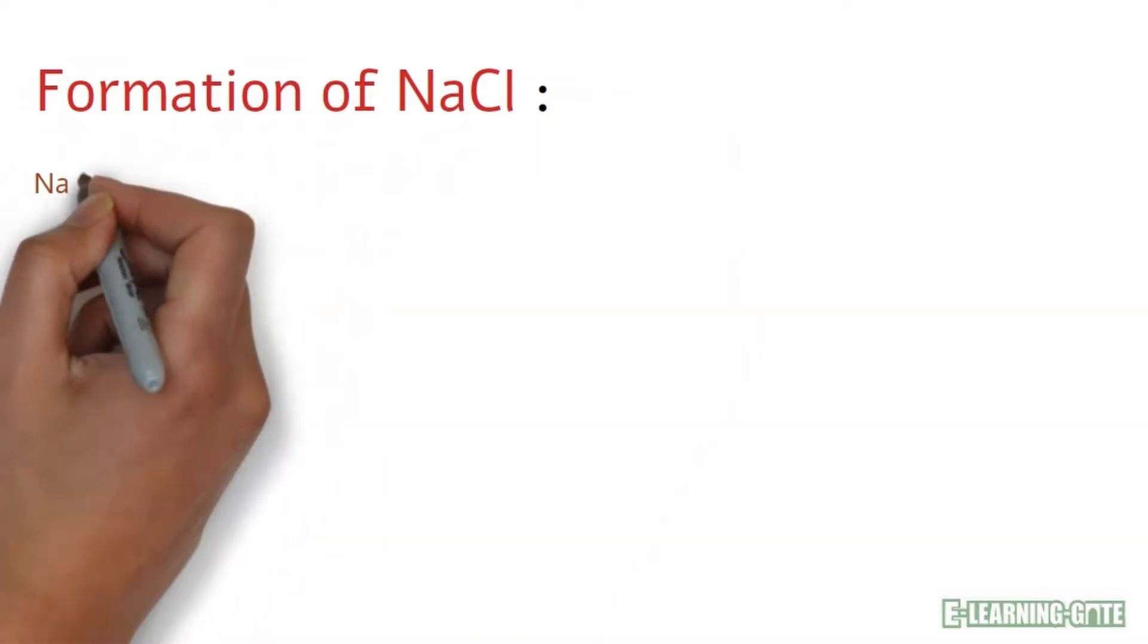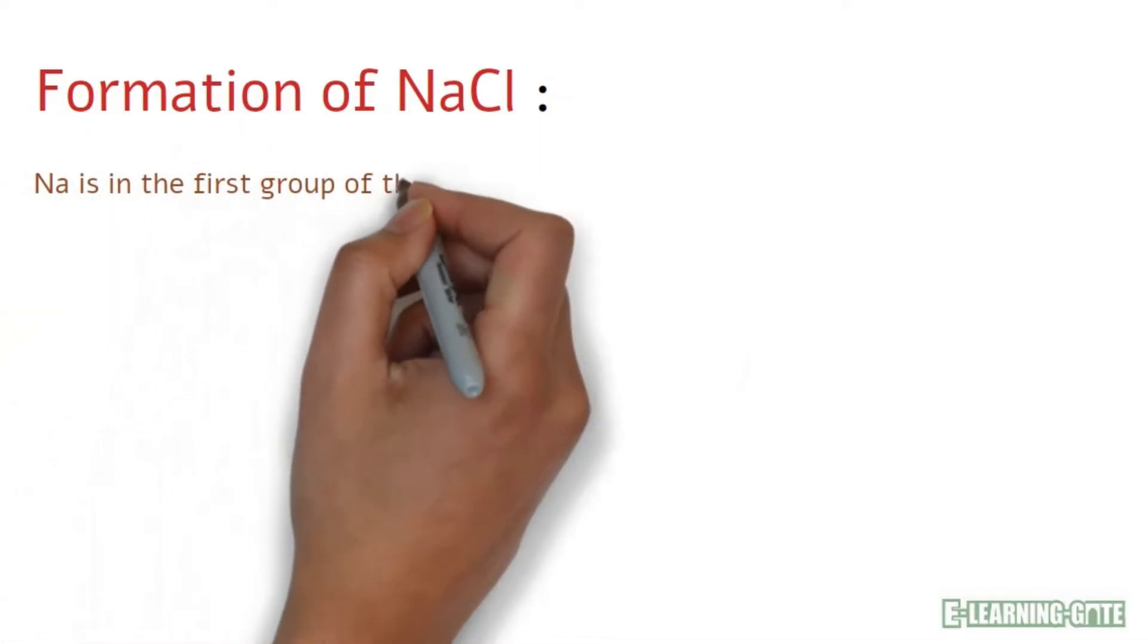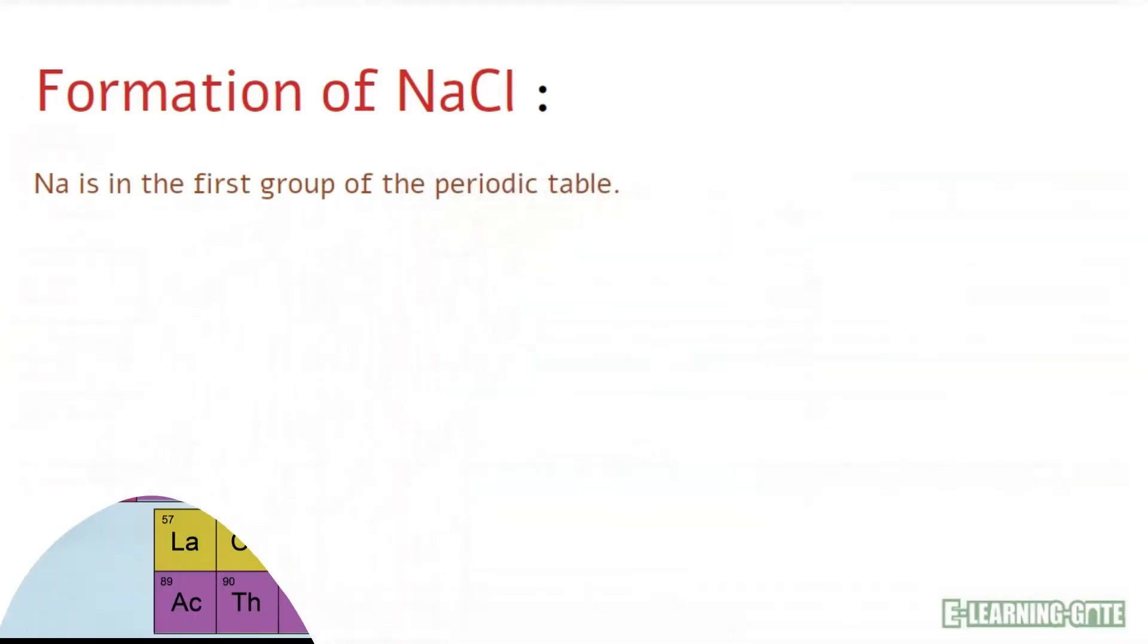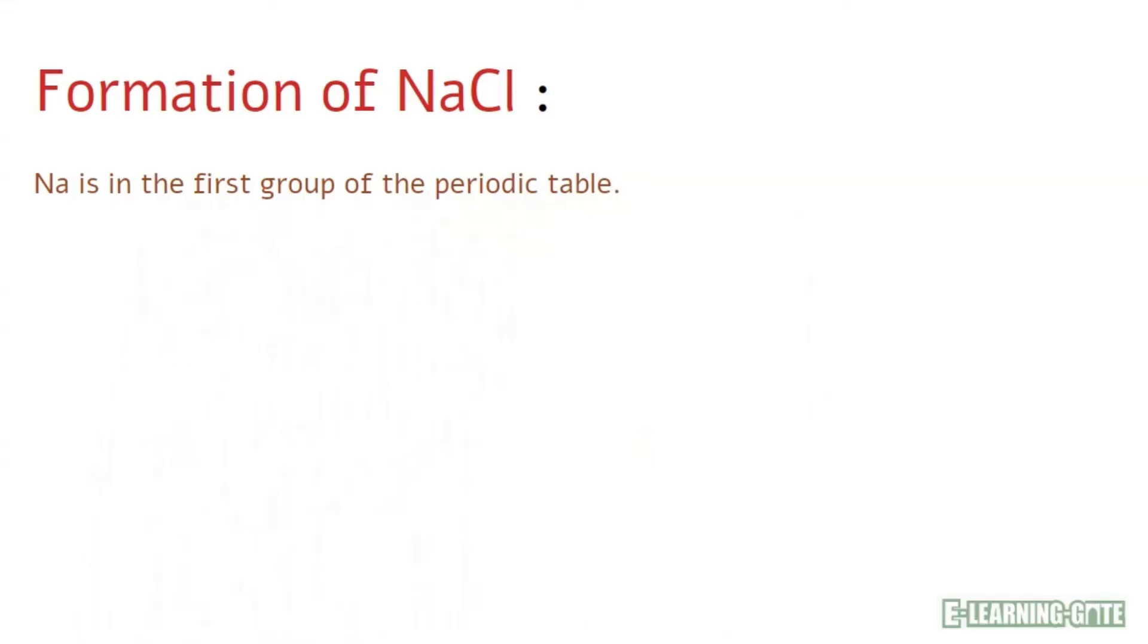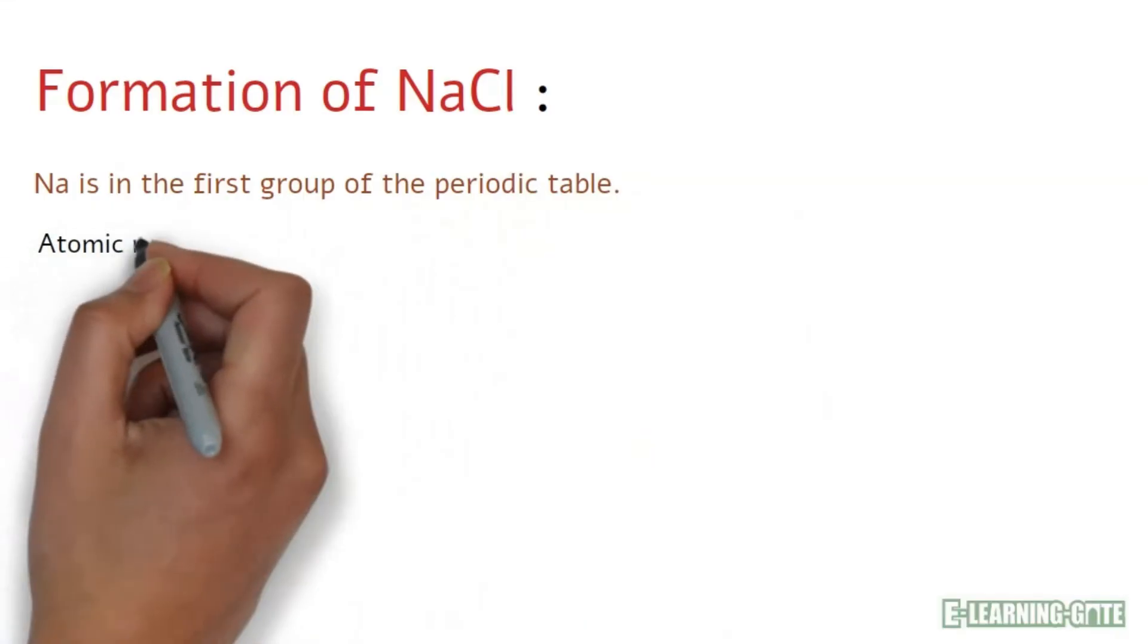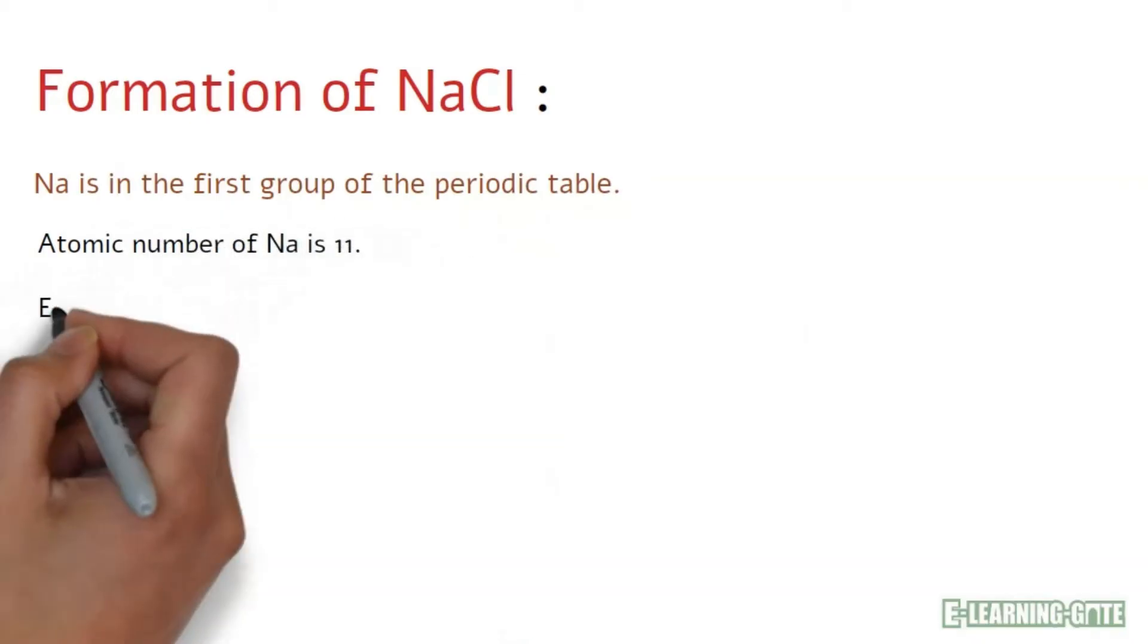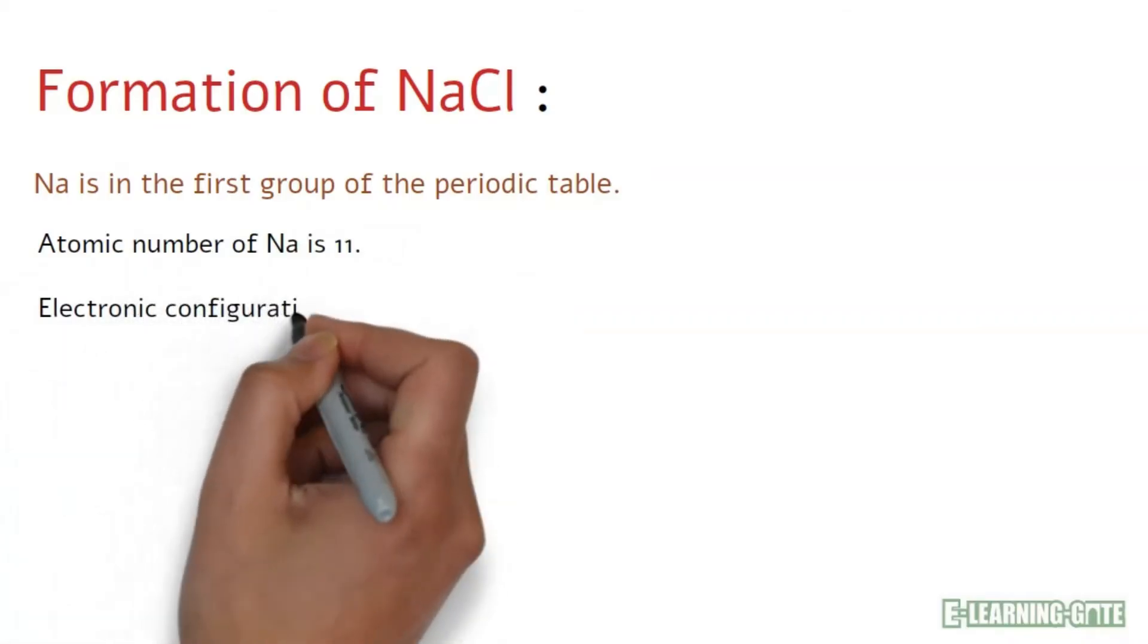Now let us see in detail the formation of ionic compounds. We will take an example of sodium chloride. Sodium is in the first group of the periodic table. The atomic number of sodium is 11. Electronic configuration shows that there are three electronic shells.